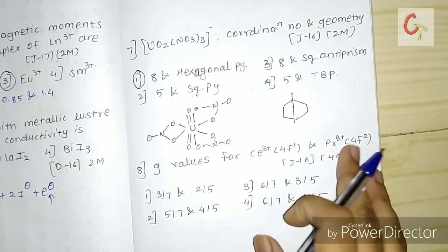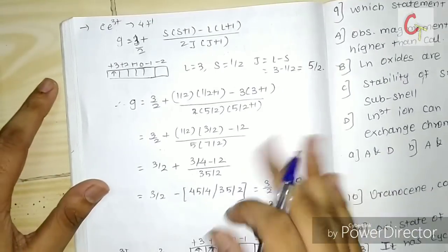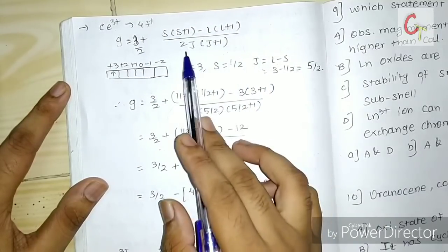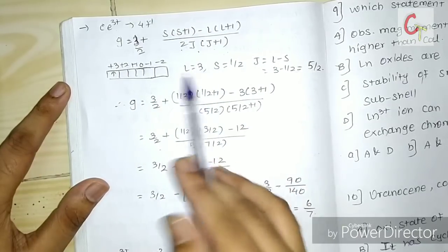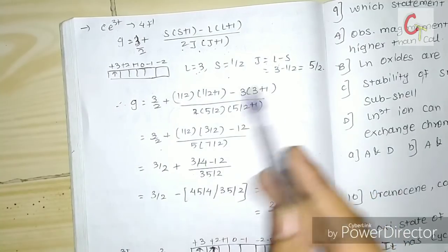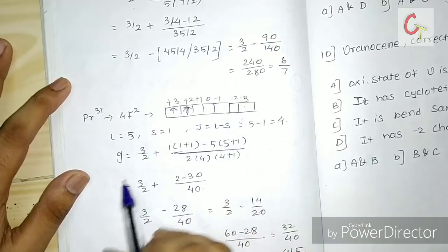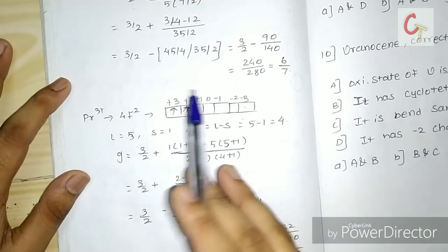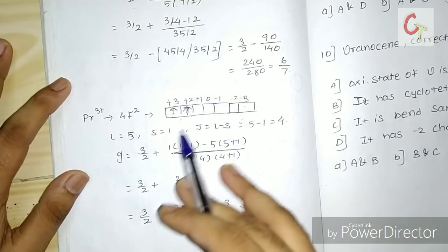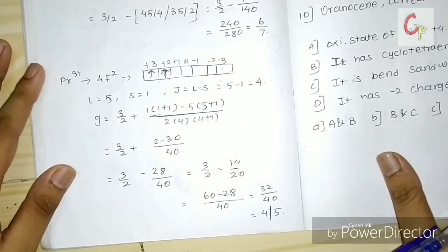Next we calculate the Landé g-factor for Ce³⁺ and Pr³⁺. The formula is: g = (3/2) + [S(S+1) − L(L+1)] / [2J(J+1)]. For Ce³⁺: S=1/2, L=3, J=5/2 (less than half-filled, so J = L−S). This gives g = 6/7. For Pr³⁺: S=1, L=5, J=4 (again L−S for less than half-filled). This gives g = 4/5. So the answer is D.